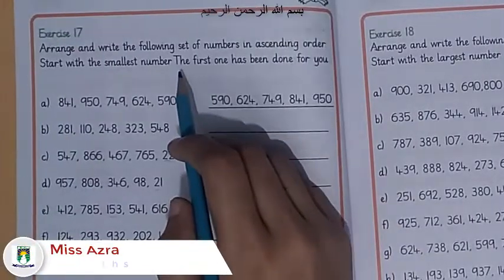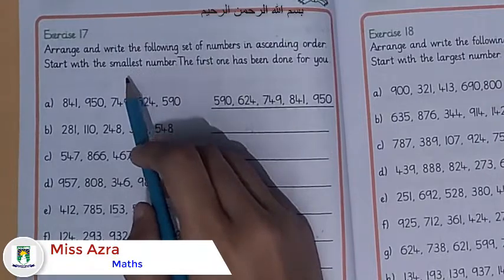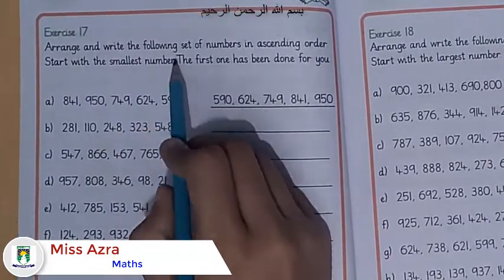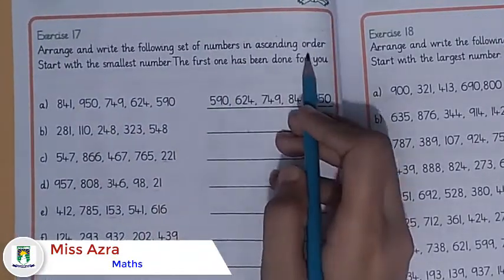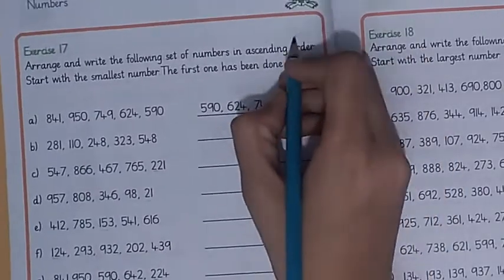As-salamu alaykum class 2. Today we will solve exercise number 17: arrange and write the following set of numbers in ascending order. We have to arrange these numbers in ascending order.